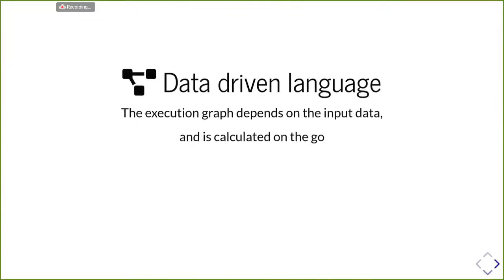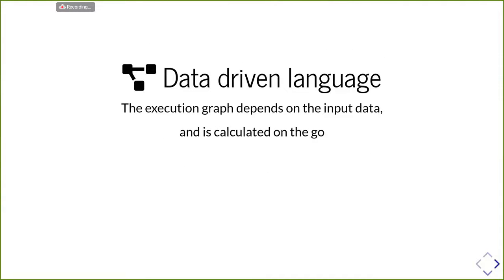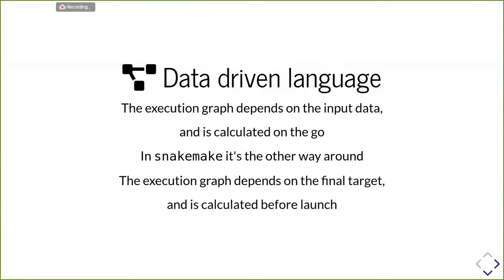Nextflow is a data-driven language, which means that the way to link all the different tools within the pipeline — the execution graph — depends on the input data, and is calculated on the go. In SnakeMake, it's actually the other way around: the execution graph depends on the final target and is calculated before launch. That's the main difference between SnakeMake and Nextflow — the logics are different. But apart from that, I do think the languages provide similar possibilities, and I'm just happy as long as you use a workflow manager.